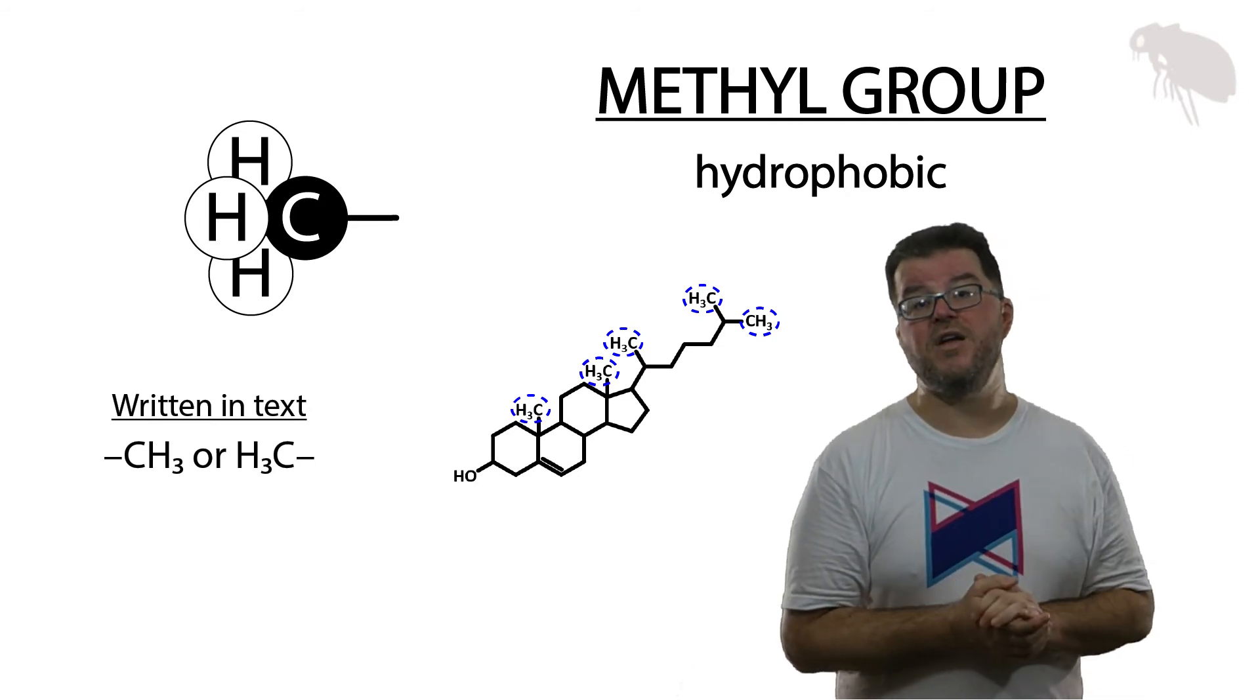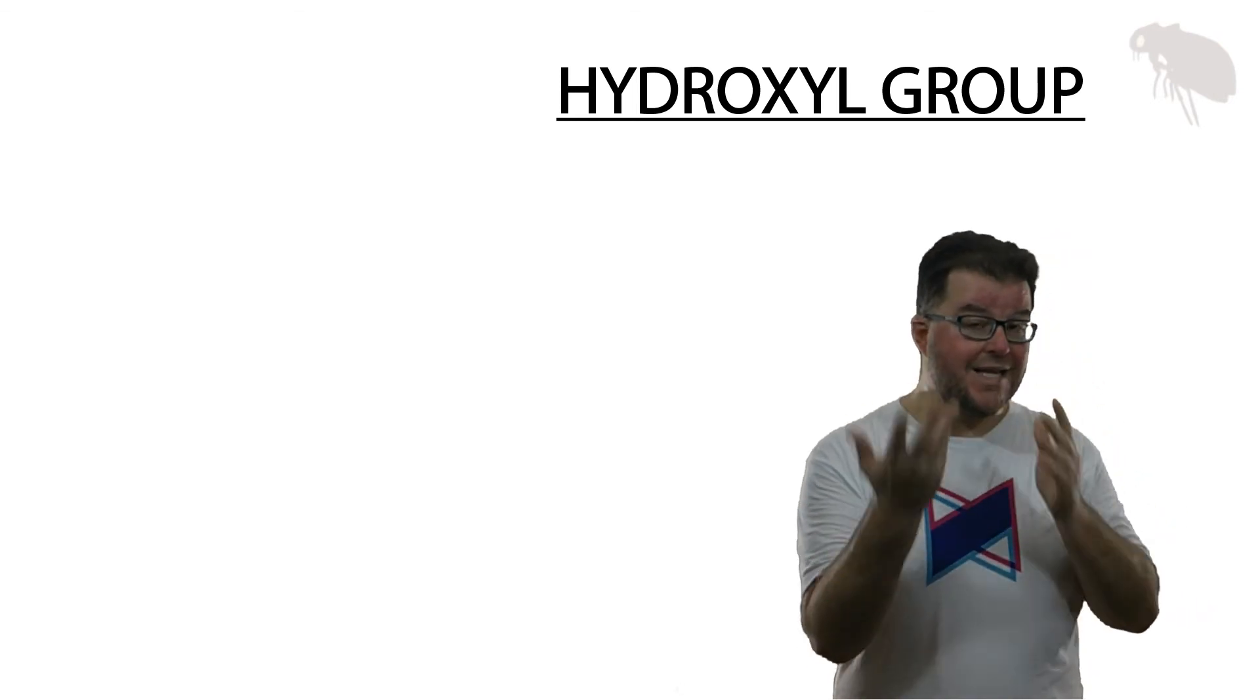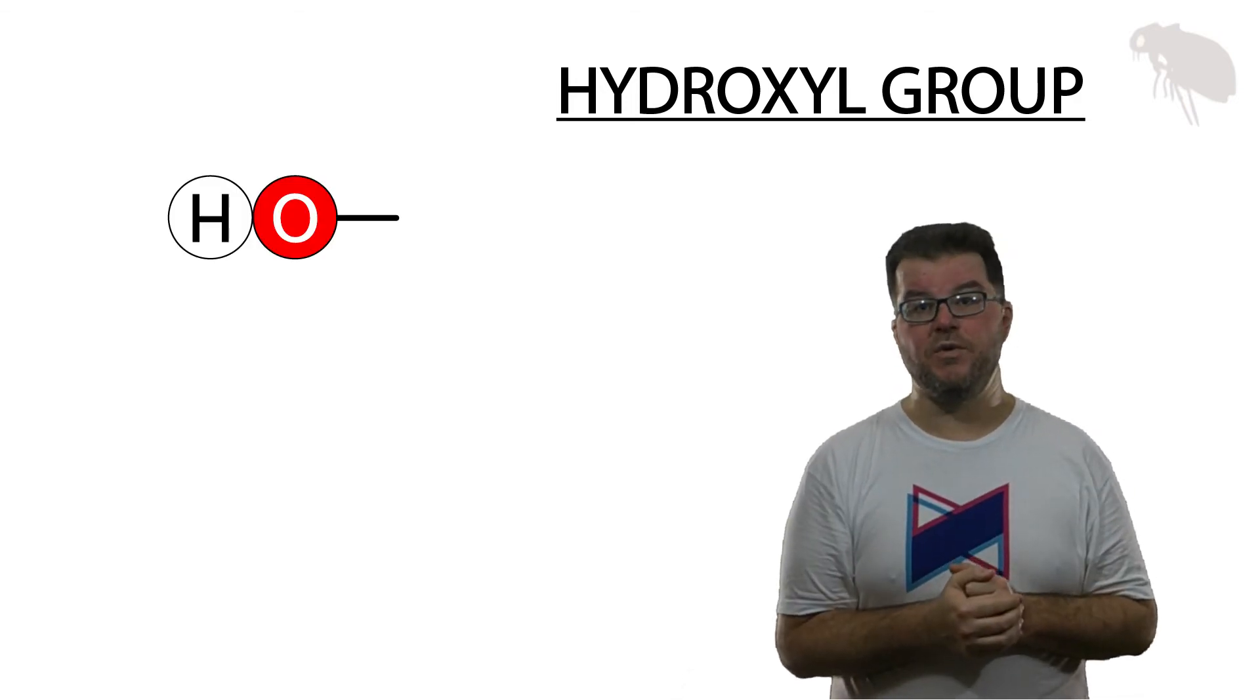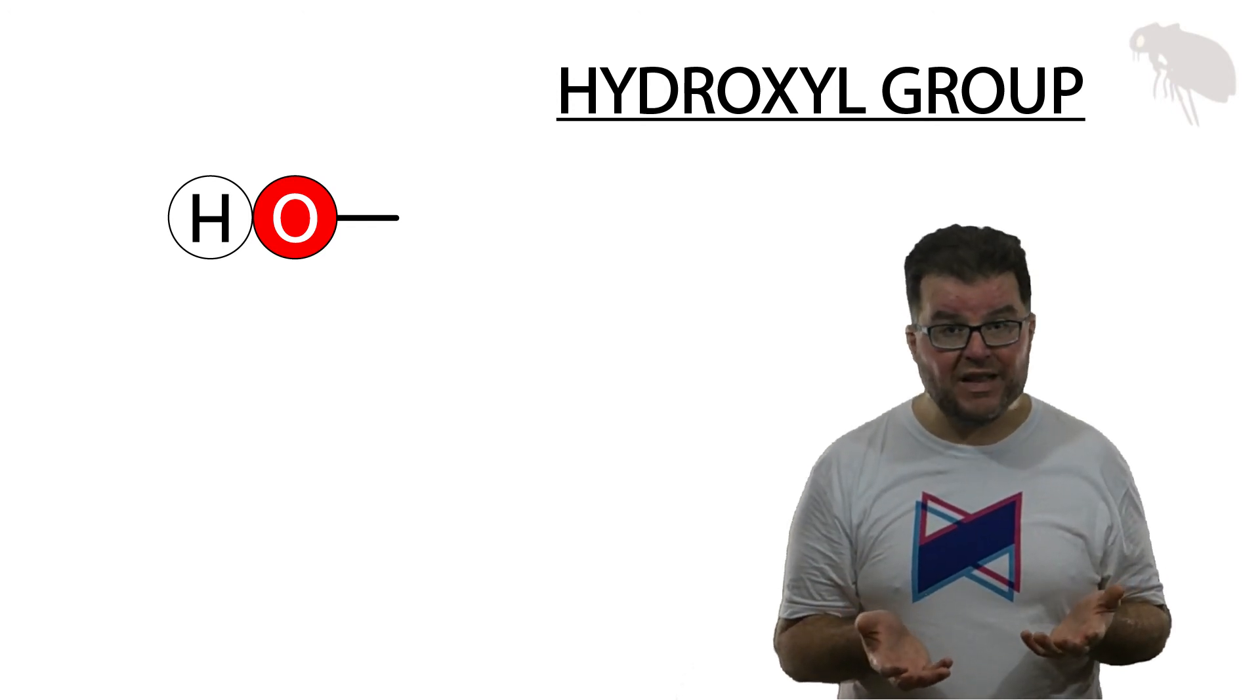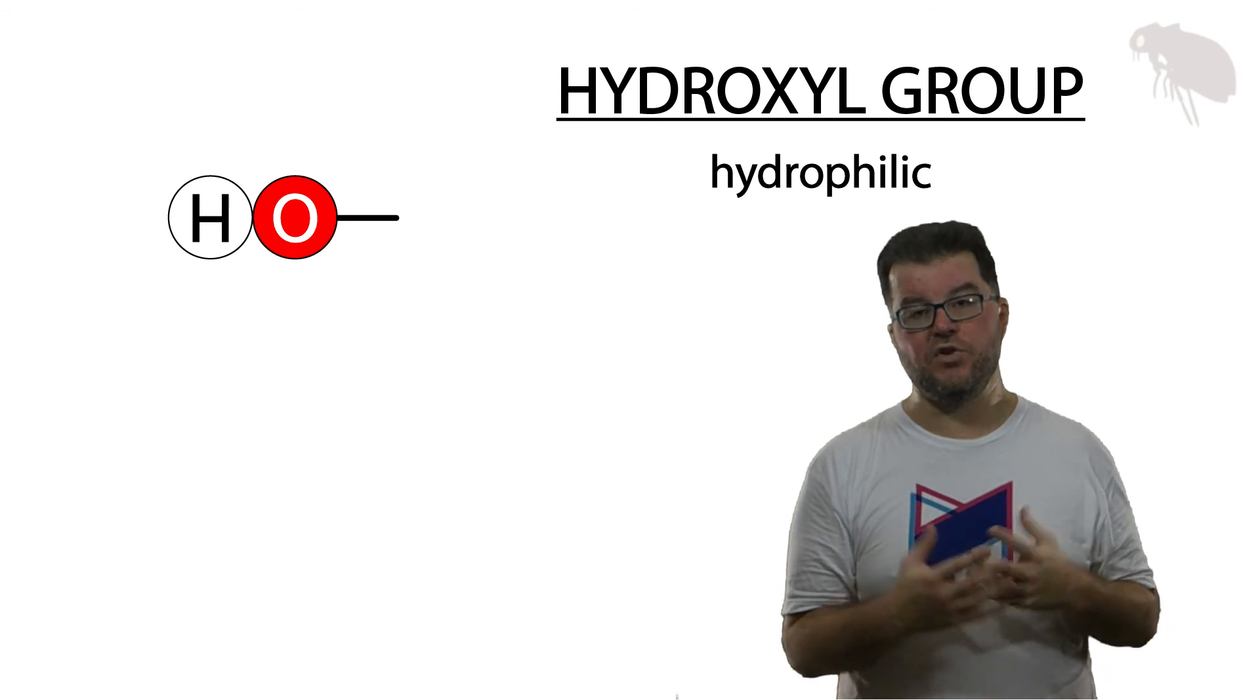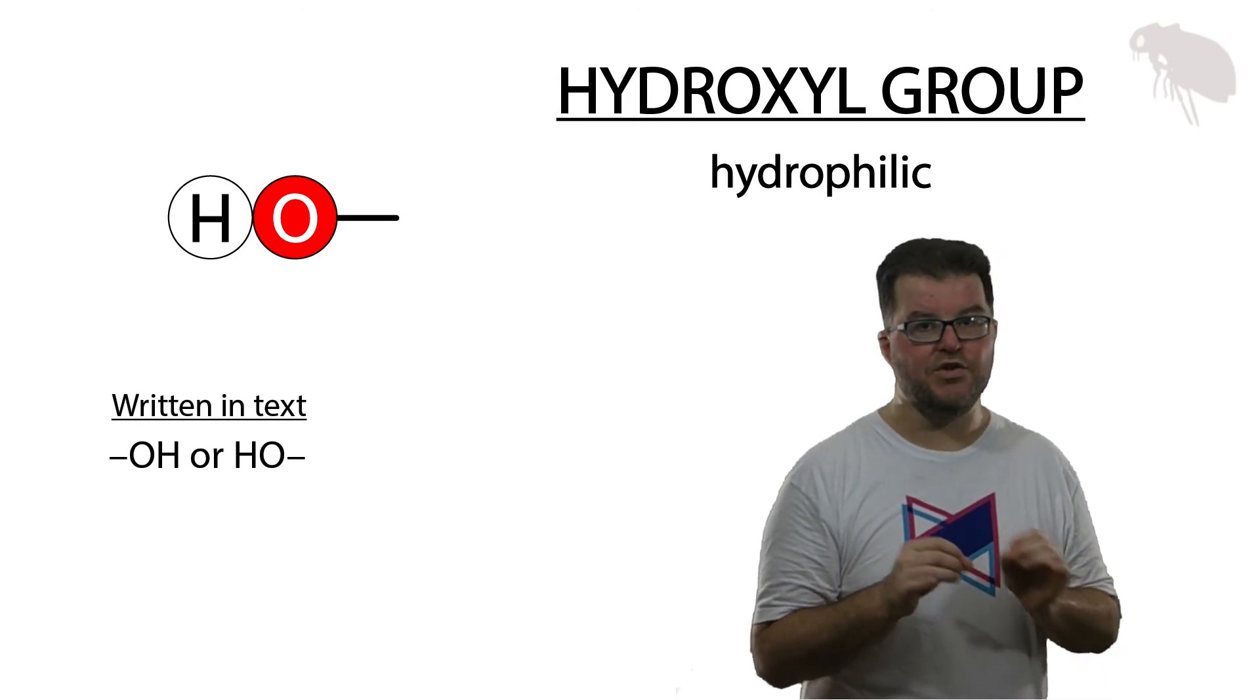Now if we have a hydrophobic functional group, there must be a hydrophilic one. Let's check out the hydroxyl group. Hydroxyl, as the name implies, contains a hydrogen and an oxygen—an oxygen covalently bound to a hydrogen. Since oxygen forms polar covalent bonds with every atom that isn't oxygen, this is a very polar formation and it's a hydrophilic group. It's going to easily hydrogen bond with water. It's written as OH or HO, with the bond on the oxygen.